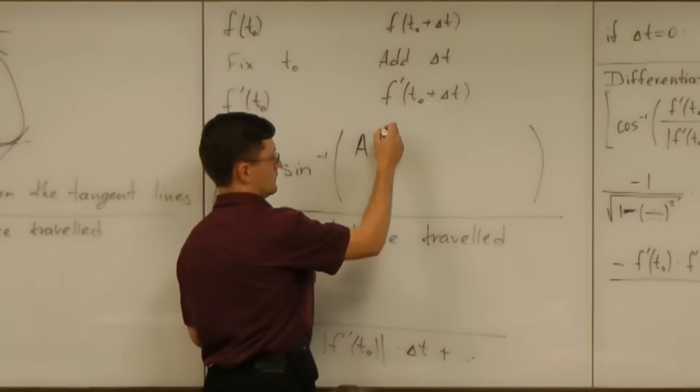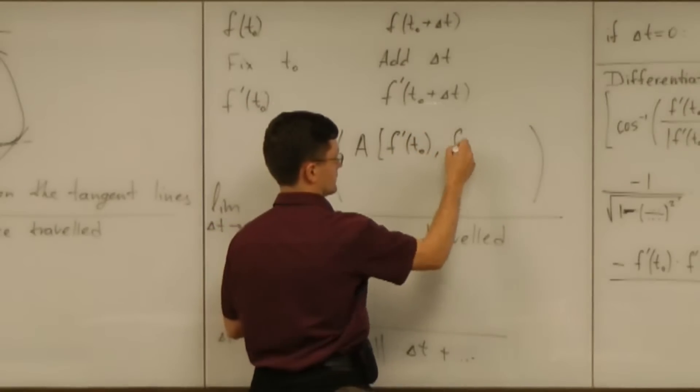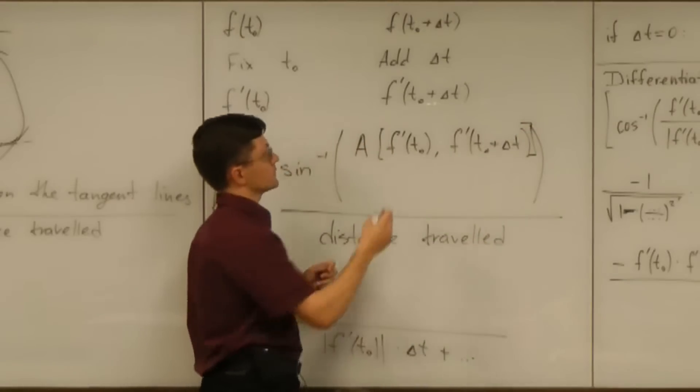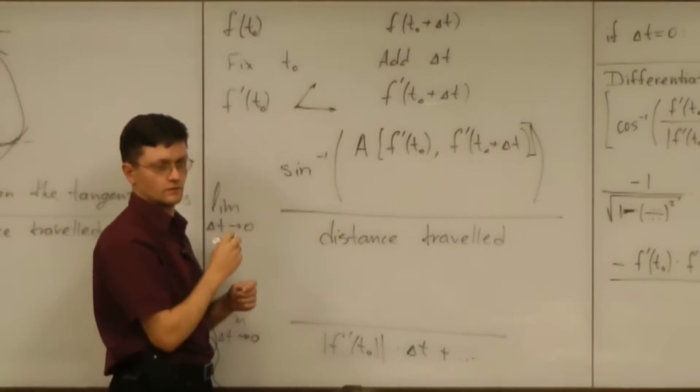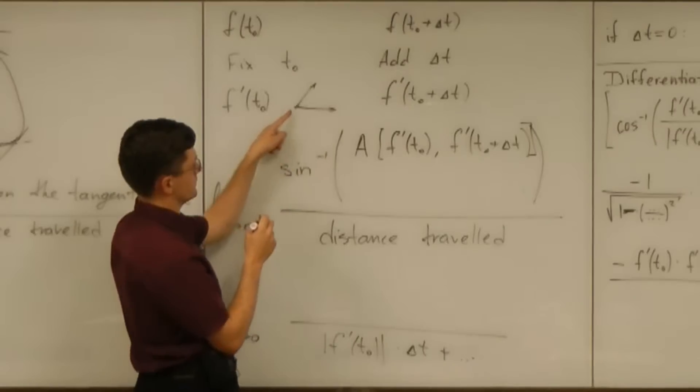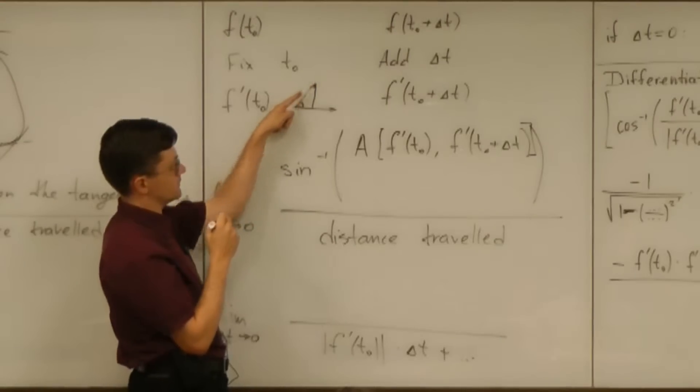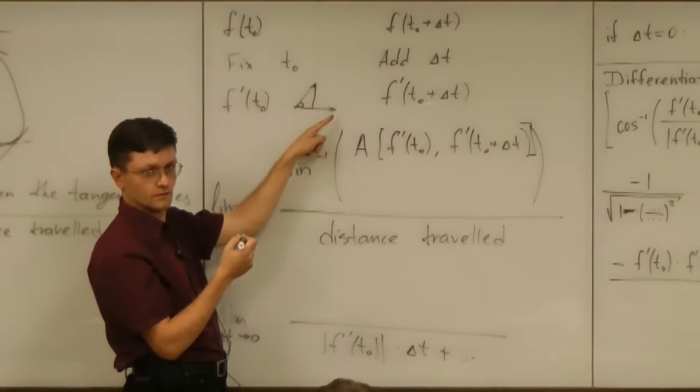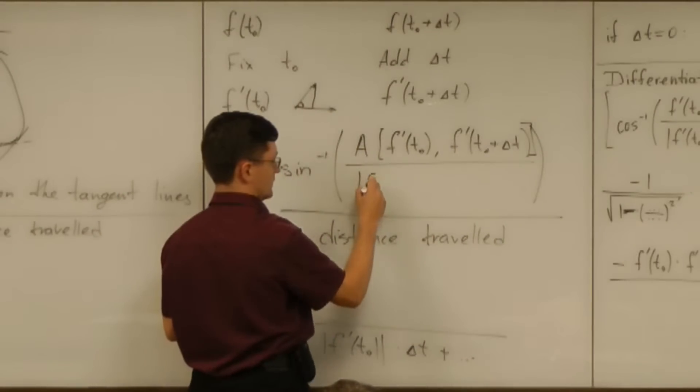So the area on the two vectors, and the vectors are still f prime of t0 and f prime of t0 plus delta t. You look at those two vectors. What if you multiply this length times that length times the sine of this angle? That times the sine is the height. And the height times the base is the area.